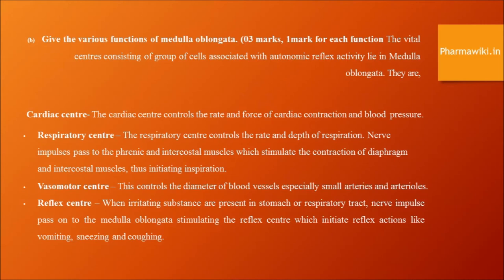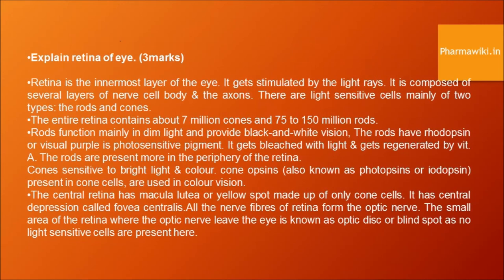The retina is the innermost layer of the eye. It gets stimulated by light rays and is composed of several layers of nerve cell bodies and axons. There are light-sensitive cells of two main types: rods and cones. The entire retina contains about 7 million cones and 75 to 150 million rods. Rods function mainly in dim light and provide black and white vision. Rods contain rhodopsin, or visual purple, a photosensitive pigment that gets bleached by light and regenerated with vitamin A. Rods are present more in the periphery of the retina.